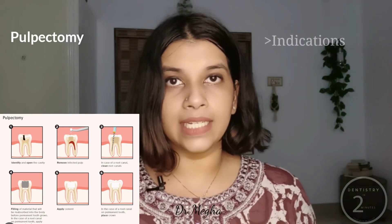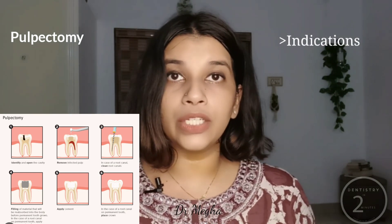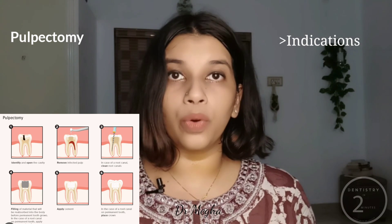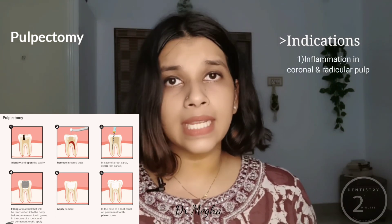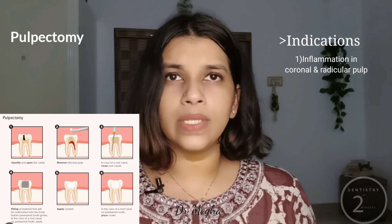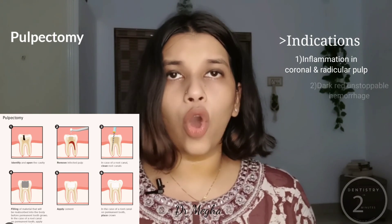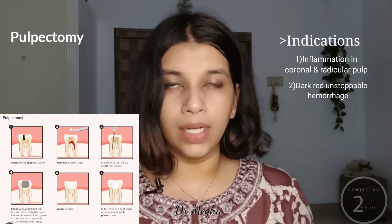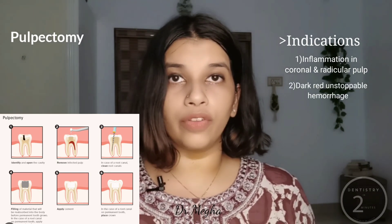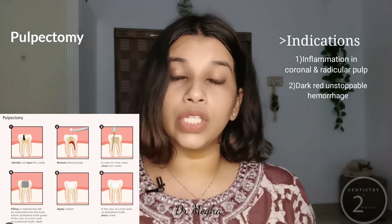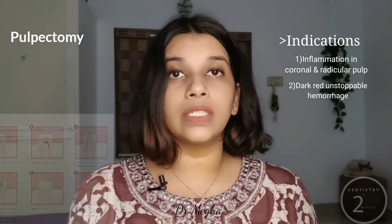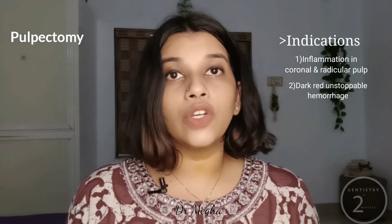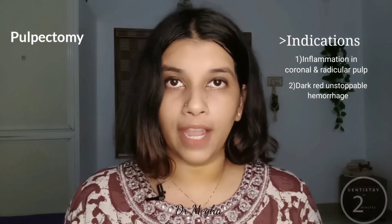When is it indicated? It is usually indicated when the inflammation has spread to the coronal as well as the radicular portion of the pulp, which is indicated by a hemorrhage which is dark red or purple in colour, which oozes out of the canal orifice.